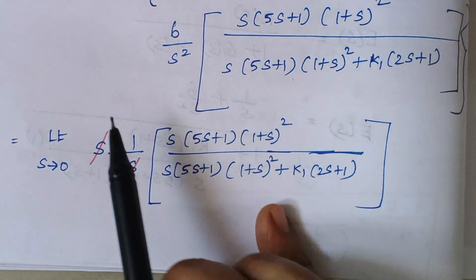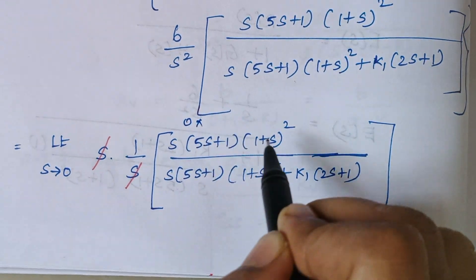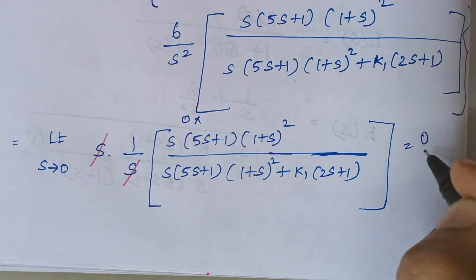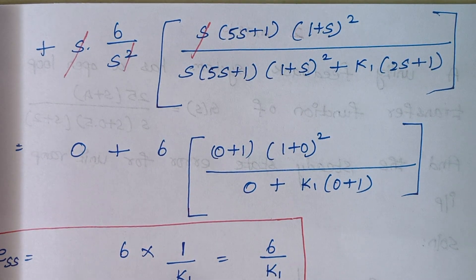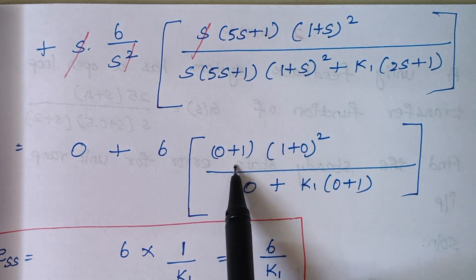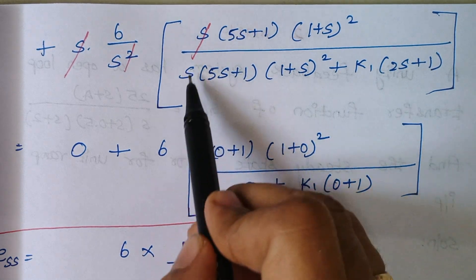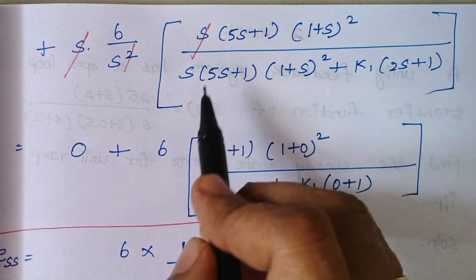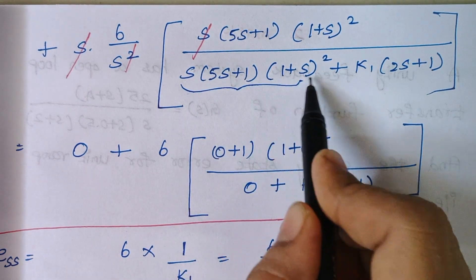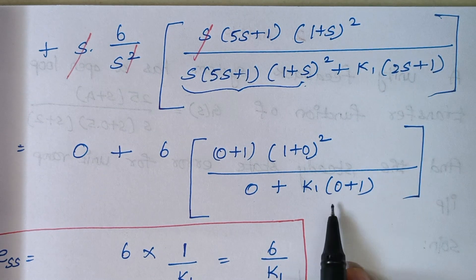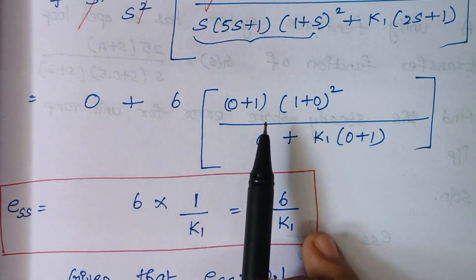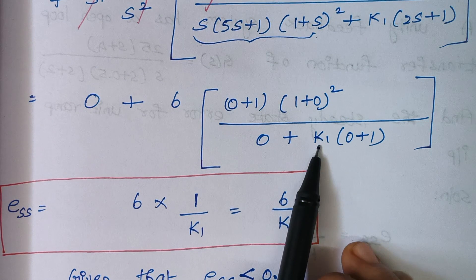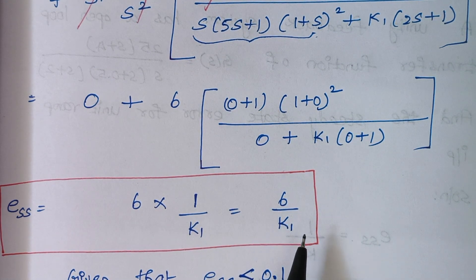When we substitute s = 0, zero multiplied by anything is zero, and zero divided by anything is zero. So the first term reduces to 0. For the second term, substituting s = 0 gives 0 + 1 in the numerator factors, and the denominator term with s also reduces to 0 + k1·(0+1). Simplifying, the steady state error equals 6/k1.